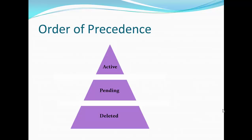The order of precedence for survivorship is: active, then pending, then deleted. For example, if there are three records — one active, one pending, and another active — and we delete one active record, the other active will be chosen as survivor. If the second active record is also deleted, then the pending record will become the survivor. So the preference is: active first, then pending, then finally deleted.